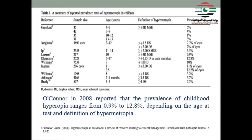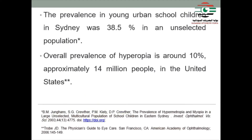A study by Conor reported a prevalence range from 0.9 to 12.8%, depending on age, test used, and the definition of hypermetropia. The prevalence in young urban school children in Sydney, Australia was 38.5% in an unselected population. Overall prevalence of hyperopia is approximately 10% — around 14 million people in the United States, according to data from 2006.